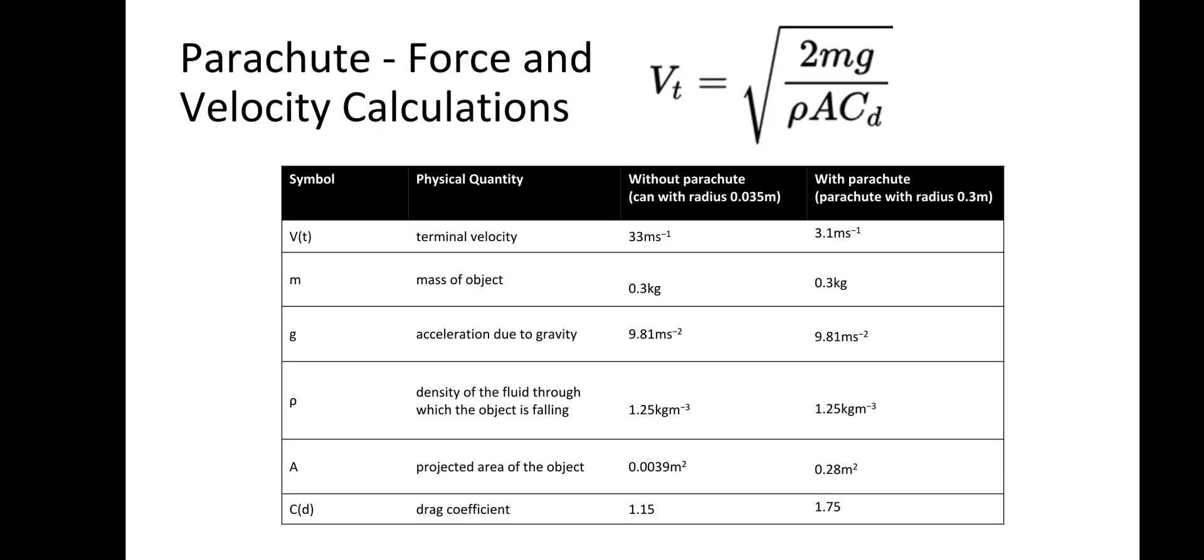Initially, the team had to decide on a suitable parachute size, so that the equipment would be able to be recovered. The equation in the top right is used by aeronautical engineers to calculate the terminal velocity of an object. As shown in the table, with a parachute, the CANSAT would slow to a much more manageable 3.1 meters per second.